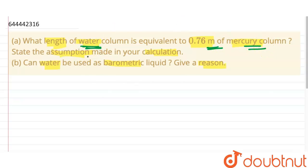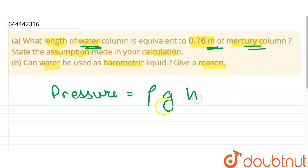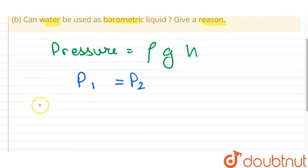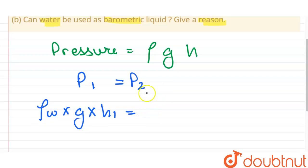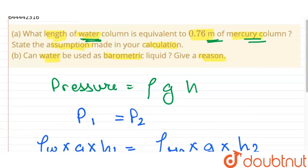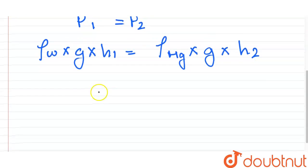Pressure is given by rho (density of liquid), g (gravitational acceleration), and h (height of the liquid). Equating P1 = P2, we get: density of water × g × h1 = density of mercury × g × h2, where h2 is given as 0.76 meters.